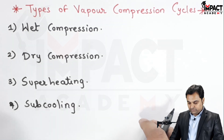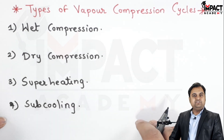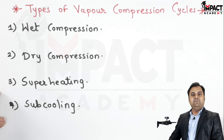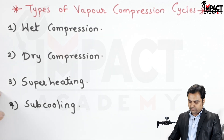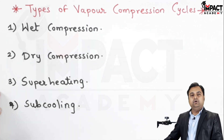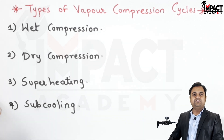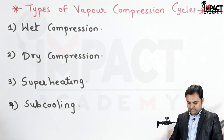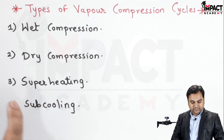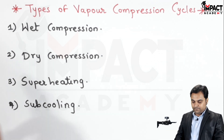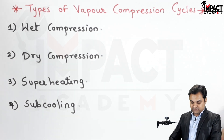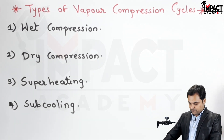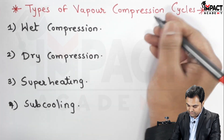These are the four types of vapor compression cycles which we are going to see further, drawing the pH and TS diagram for them. In wet compression — let me simplify what is the meaning of wet compression.